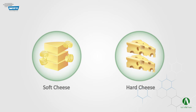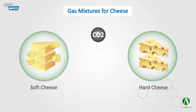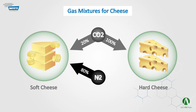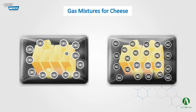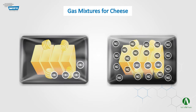In the packaging of some other types of foods, such as cheese, the mixture is completely different. In this case, carbon dioxide is used first and foremost. The carbon dioxide level in hard cheese packages is up to 100%, and for soft cheese the level is usually restricted to 20–40%. The reason for this is to prevent the package from collapsing under atmospheric pressure, as the carbon dioxide dissolves into the water content.